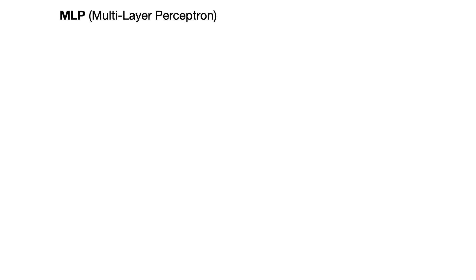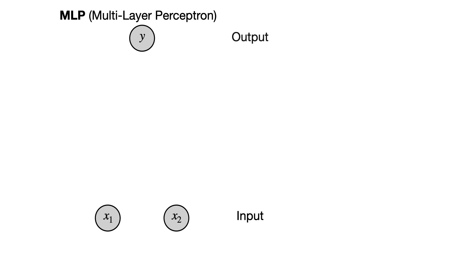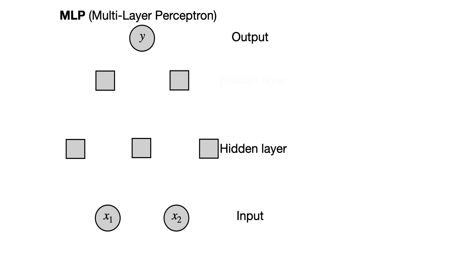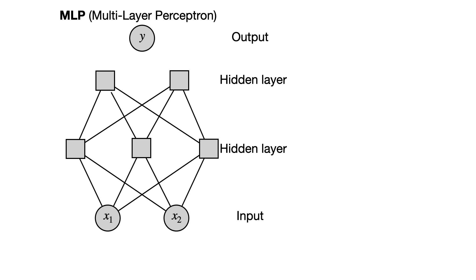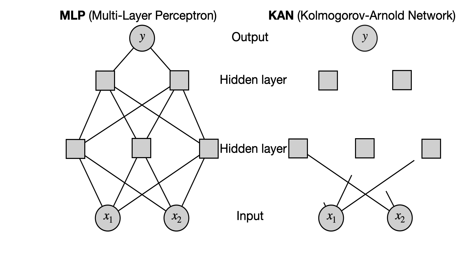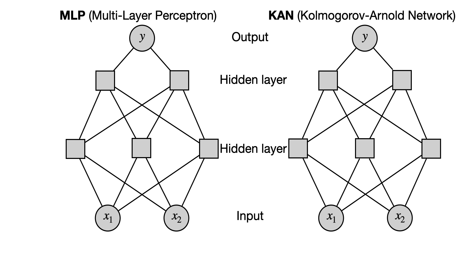Let's start by reviewing our multi-layer perceptrons, or regular neural networks. They have an input layer, an output layer, and a bunch of hidden layers. In this example they're going to have two hidden layers, and they have edges between every node on a layer and every node on the next layer. Kolmogorov-Arnold networks are very similar — they also have an input layer, output layer, and mid layers, and a bunch of edges connecting each layer and the next one.